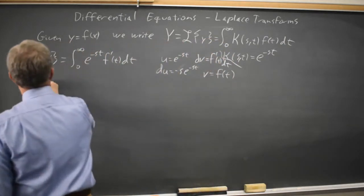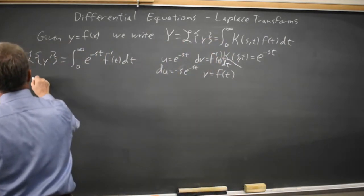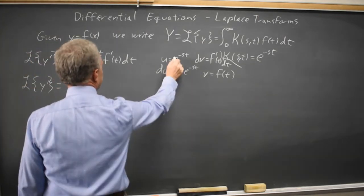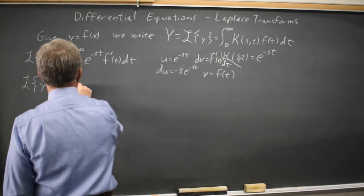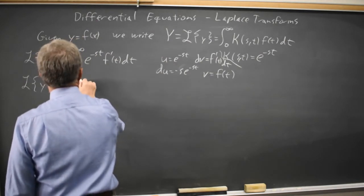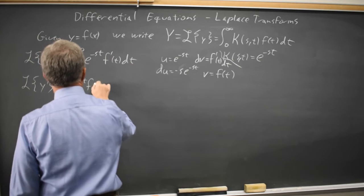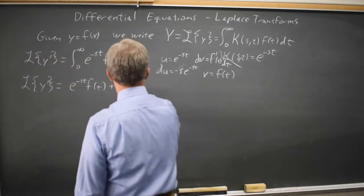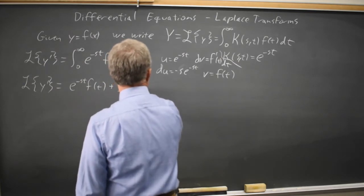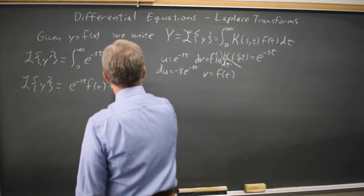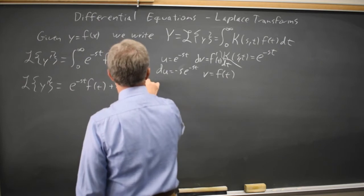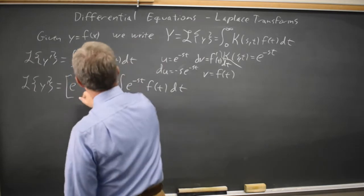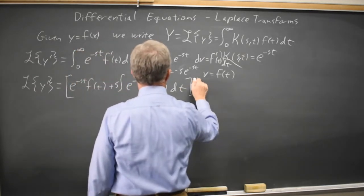So integration by parts tells us that the transform of y prime is uv, which is e to the negative st times f of t minus the integral of v du, which is plus the integral of s, e to the negative st, f of t, dt, with both of those taken from 0 to infinity.